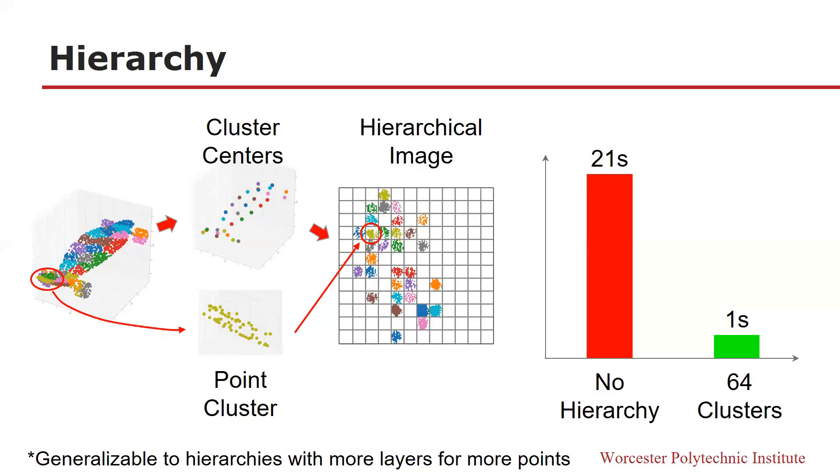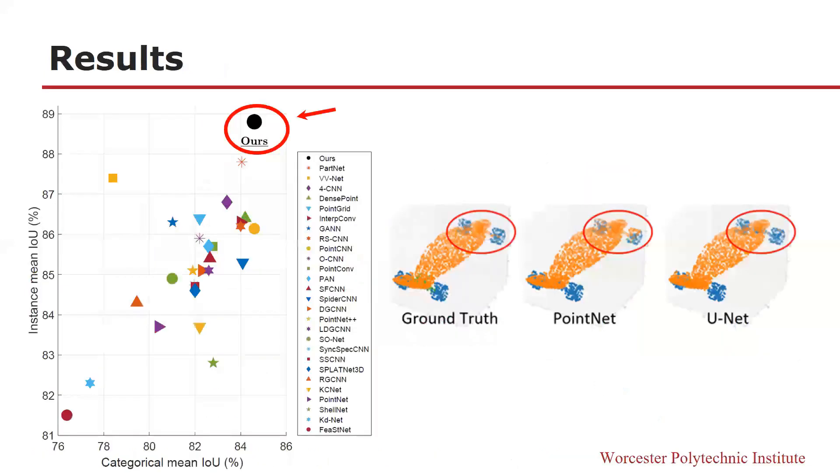Furthermore, the scheme is generalizable to hierarchies with more layers for more points. Our method achieves state-of-the-art in ShapeNet part segmentation benchmark in both category mean IoU and instance mean IoU. When looking at the example result of a skateboard, we can see that our work better segments the front wheels and boards because it well encodes geometry patterns in local regions to the point cloud image.